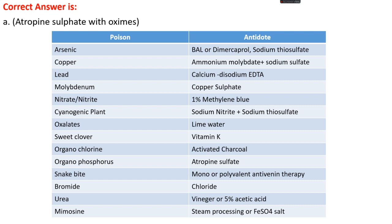Some poisons and their antidotes: arsenic poisoning — BAL or dimercaprol or sodium thiosulfate; copper poisoning — ammonium molybdate plus sodium sulfate; lead poisoning — calcium disodium EDTA; molybdenum poisoning — copper sulfate; nitrate/nitrite poisoning — 1% methylene blue; cyanogenic plant poisoning — sodium nitrite or sodium thiosulfate; oxalate poisoning — lime water; sweet clover poisoning — vitamin K; organochlorine poisoning — activated charcoal; organophosphate poisoning — atropine sulfate; snakebite — mono or polyvalent antivenin therapy; bromide — chloride; urea — vinegar or 5% acetic acid; mimosine — steam processing or ferrous sulfate salt.